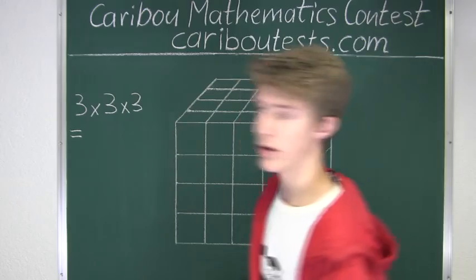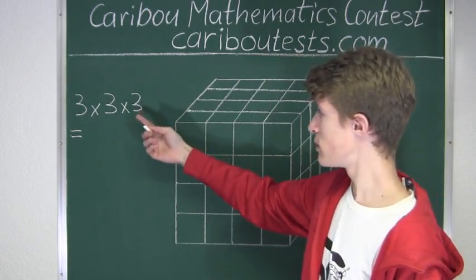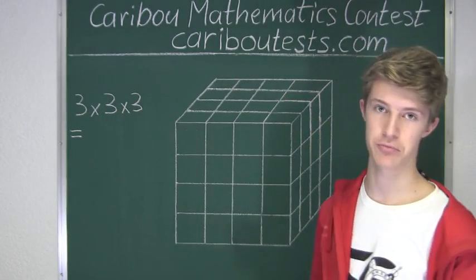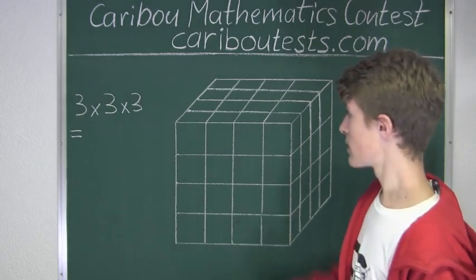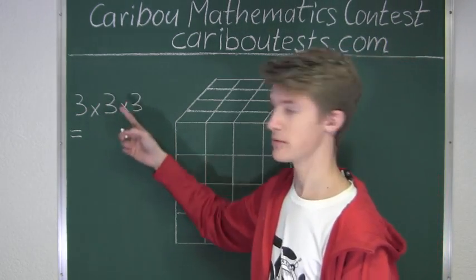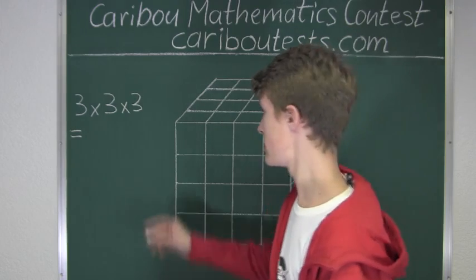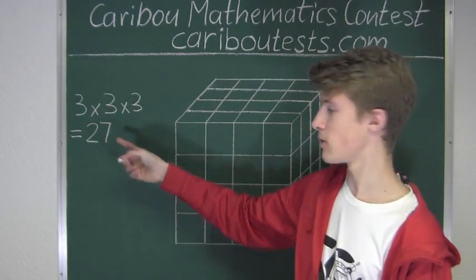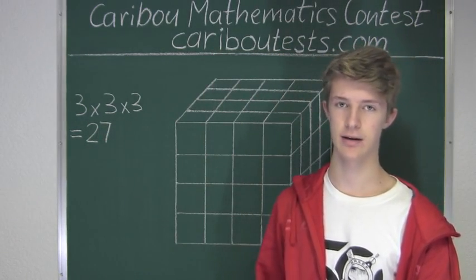So now what we are left with is just a smaller cube of size 3 times 3 times 3. And that would be 3 times 3 is 9, times 3 is 27. So we know that there are 27 small cubes with no wax on them.